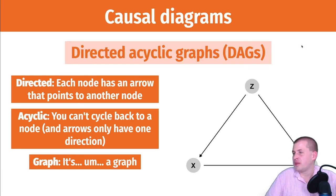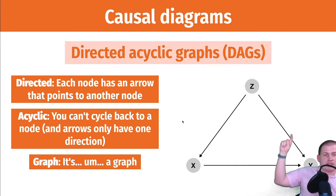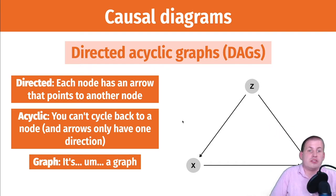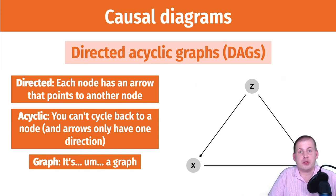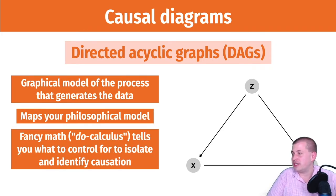You have to start at some node and you can't return to that node — that's the acyclicness of these graphs. The G in the acronym stands for graph, a causal graph. So in the example, X causes Y, Z causes X, and Z causes Y. A DAG is just a collection of nodes with arrows connecting them.